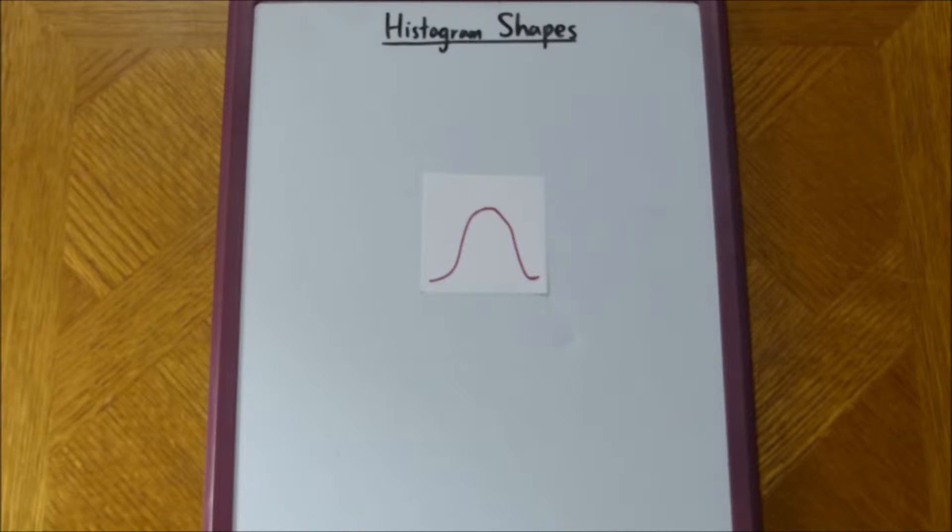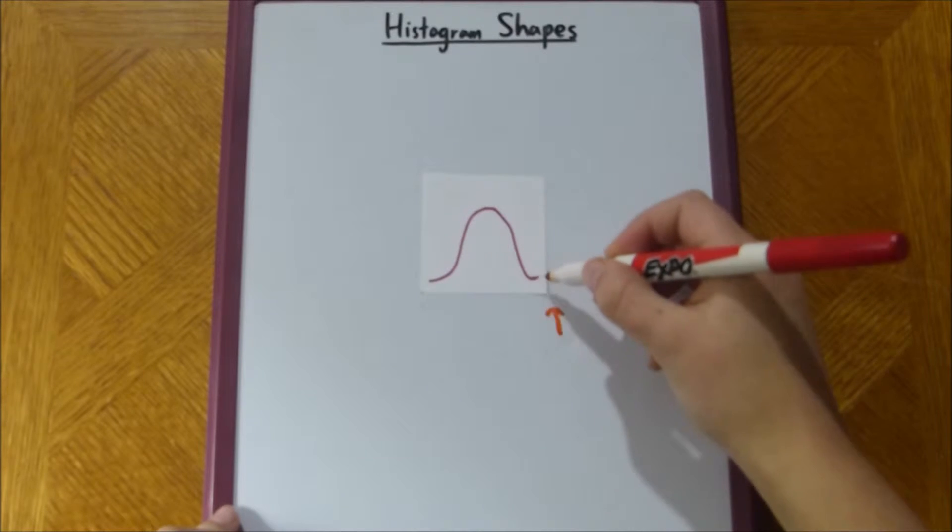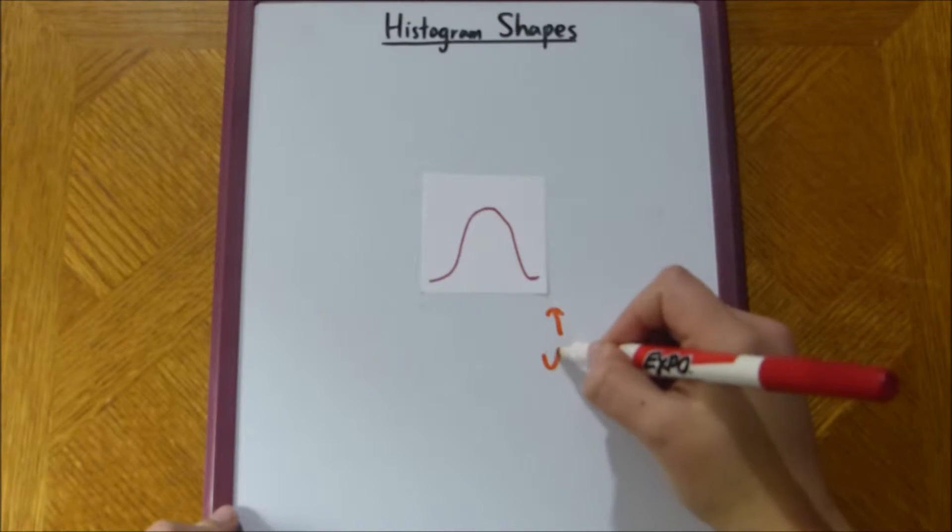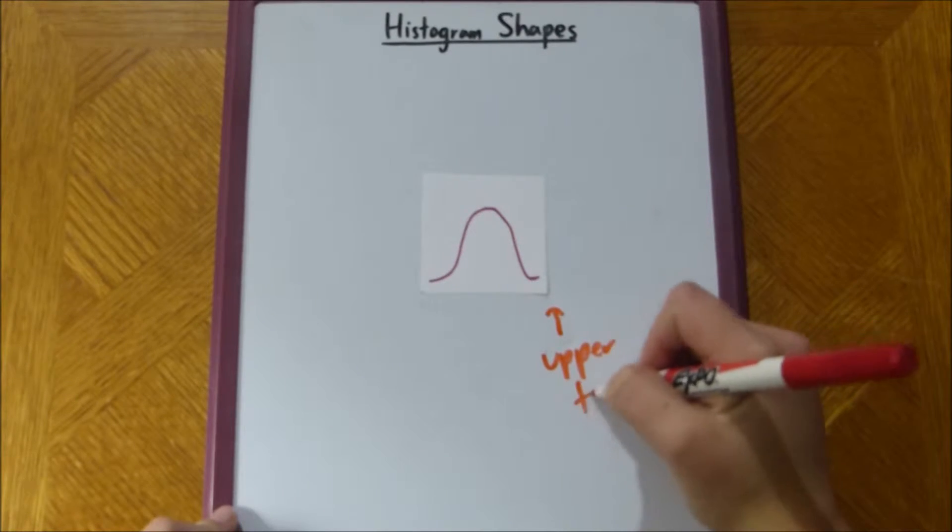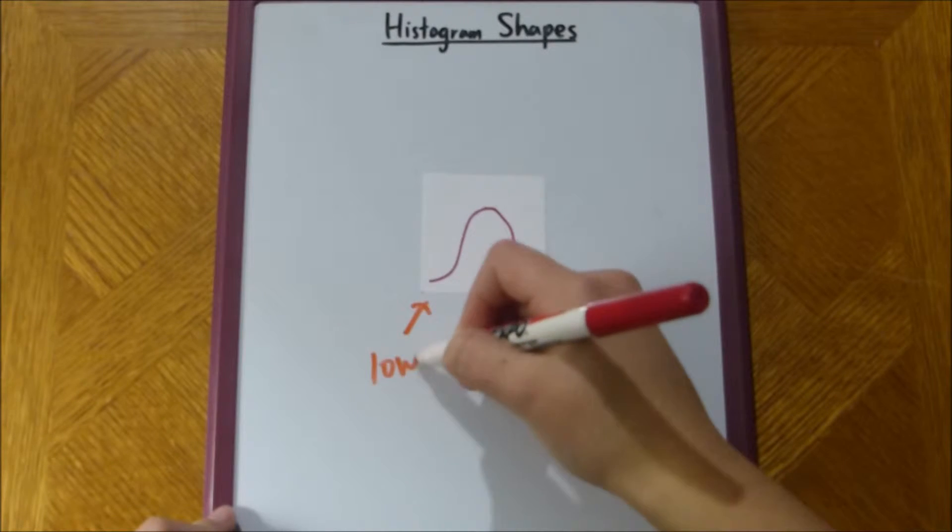And now we can break up the histogram into its sort of pieces. So, we would call this end part, this tail, its upper tail. And we can call this lower part, its lower tail, right?